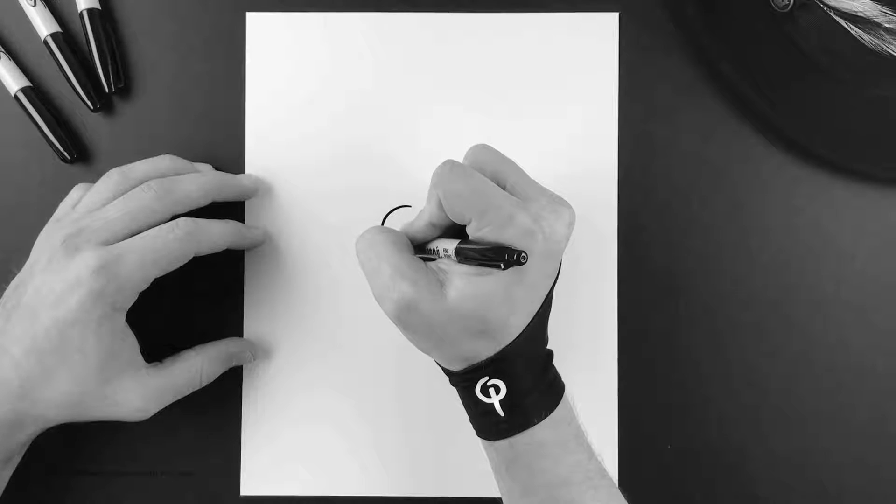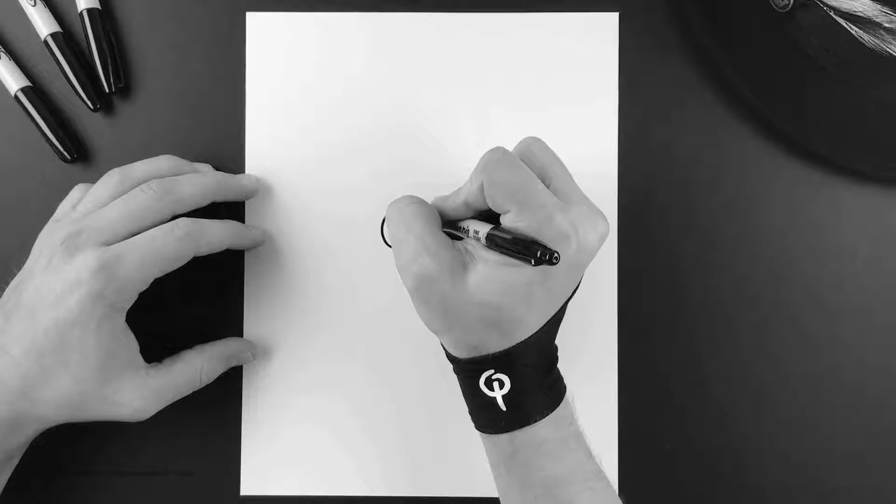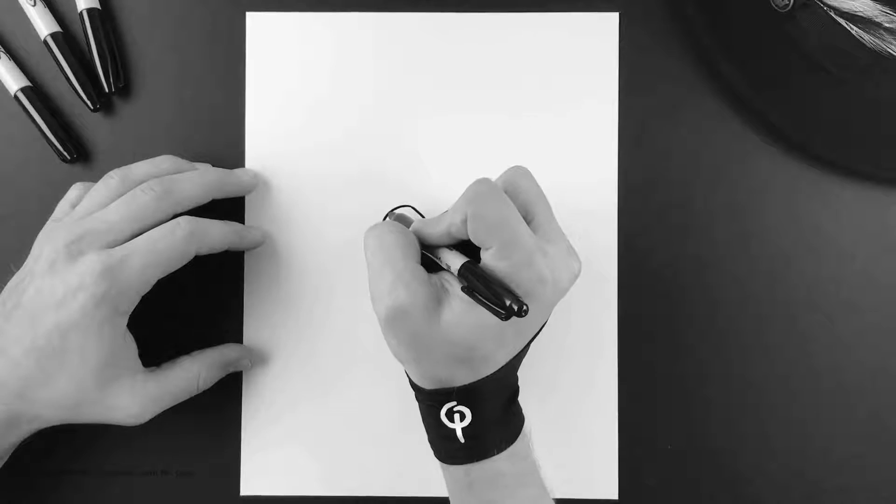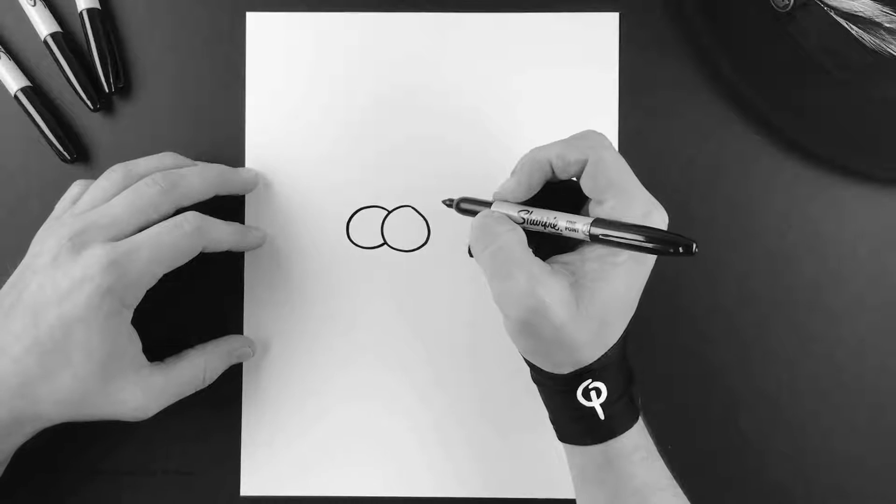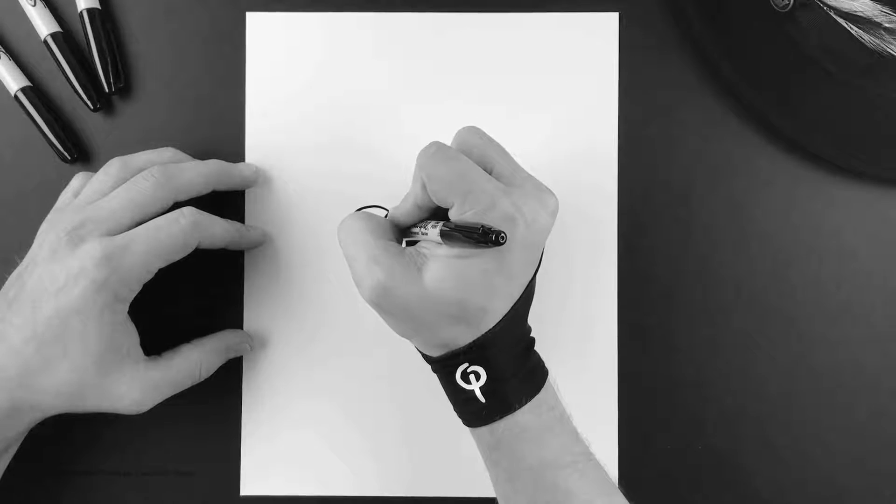And then followed by the next circle just like that. Let's go ahead and just make this bunny cross-eyed.